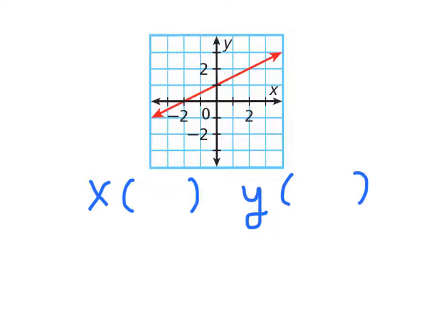Welcome back from pausing the video. The x-intercept is going to be right here. The value of x at that point is negative 2, and of course y is 0. The y-intercept is right here. The value of x would be 0, and the value of y would equal 1. So, how'd you do?